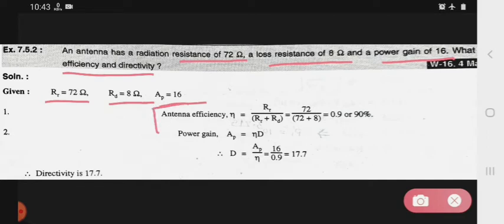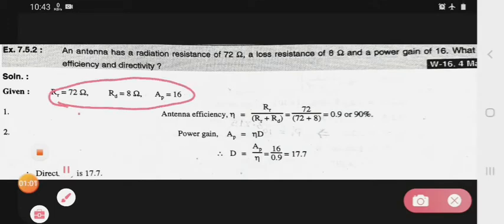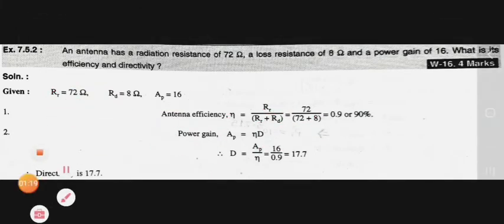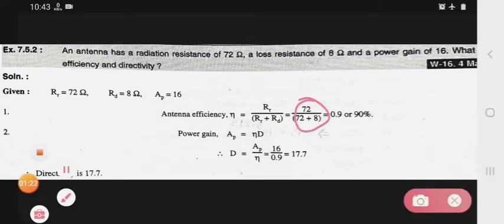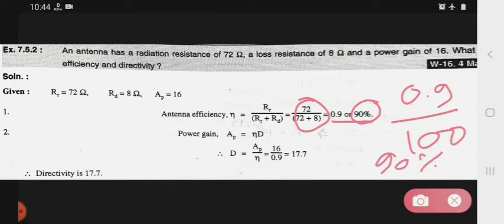This is the formula for antenna efficiency: N equals Rr upon Rr plus Rd. We put the given values in standard formula, Rr equals 72, Rd is 8. After solving this portion we get 0.9 or in percent the efficiency is 90 percent.